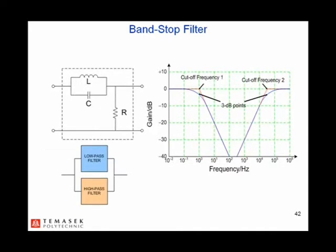A passive band stop filter typically is a parallel circuit of a low pass filter and a high pass filter. There are two cutoff frequencies and the cutoff frequency of the low pass filter should be lower than the cutoff frequency of the high pass filter.